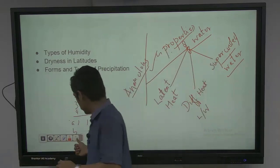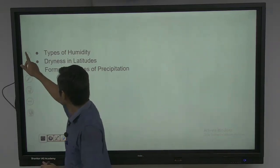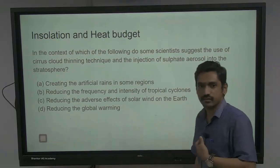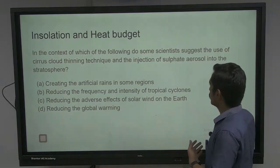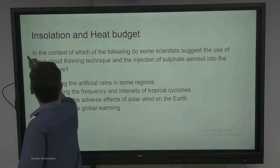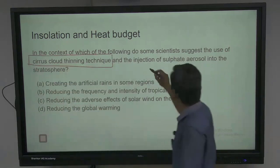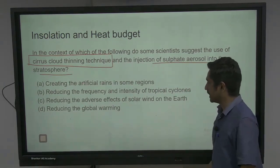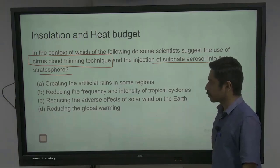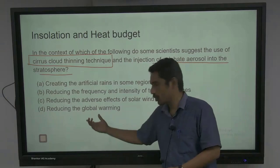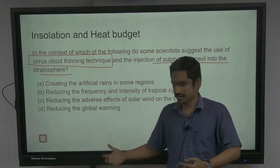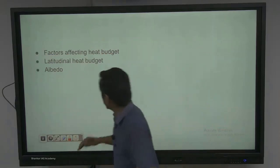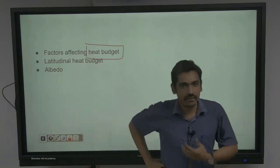That was set two based on the UPSC question. Moving to insulation and heat budget. A very simple question: In the context of which of the following do some scientists suggest the use of cirrus cloud thinning technique and the injection of sulfate aerosols into the stratosphere? Options: creating artificial rains in some regions; reducing the frequency and intensity of tropical cyclones; reducing the adverse effects of solar wind on the Earth; reducing global warming. We are talking about global warming and dealing with the greenhouse effect.